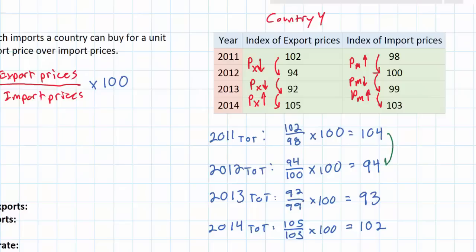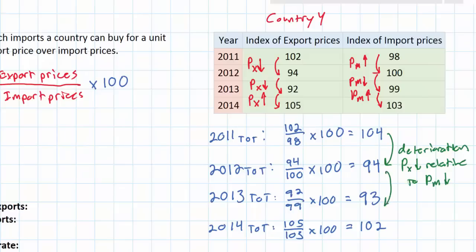Between 2011 and 2012 we see what we call a deterioration in country Y's terms of trade. This means that export prices have fallen relative to the price of imports. Between 2012 and 2013 we see a slightly smaller deterioration, but a deterioration nonetheless. Relative to the price of imports, country Y's export prices have decreased. The difference between 2012 and 2013 is that import prices have fallen as well, but overall there was still a deterioration in terms of trade.